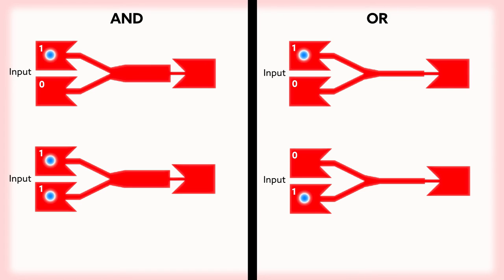The team combined these basic elements into circuits that perform the AND and OR operations fundamental to computing, which answer the questions: Are all inputs 1? And, is any input 1?